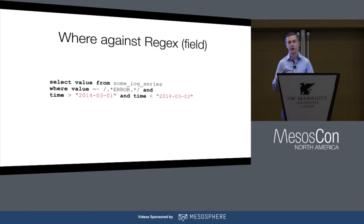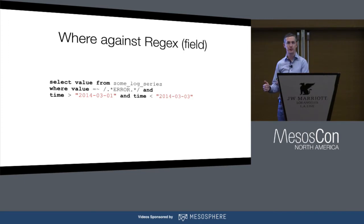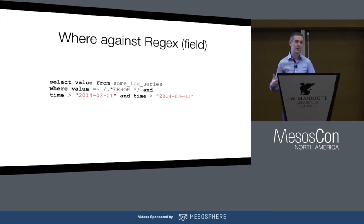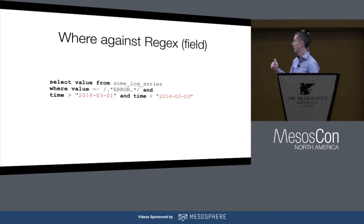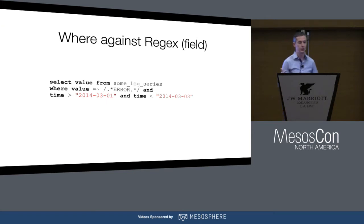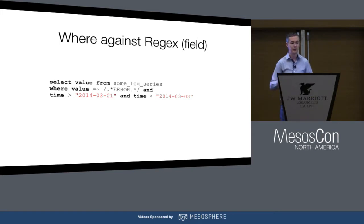Our field types — we can support different kinds. This is actually pretty unique to us as a time series database. Most time series databases only support int64 or float64, but we actually support strings and booleans as well. That means you can do interesting things with string fields — in addition to your metrics data, you can write log and annotation data to give you more information. You can match against a regex. If we're writing log lines into this, we can add time filtering and potentially filter by host or a specific service name, making this a pretty efficient query.